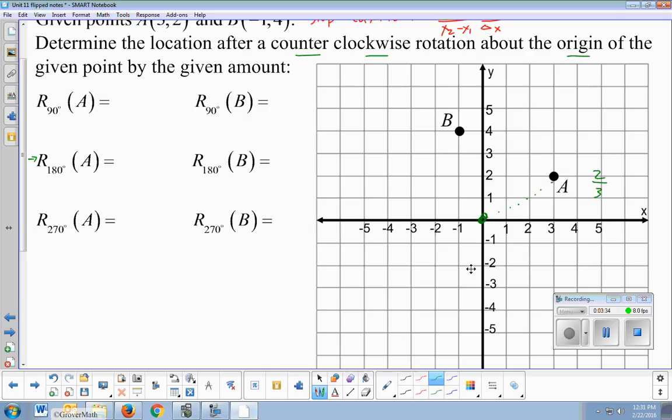So instead of up 2 over 3, I'm going to go down 2 over 3 this way. And that is my rotation of 180. It's just simply half a circle away. So that's the easiest one to do, 180. And that would give me the point negative 3, negative 2.